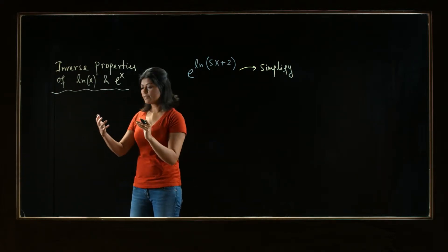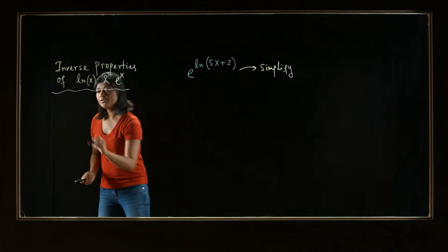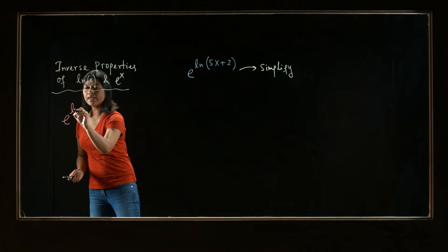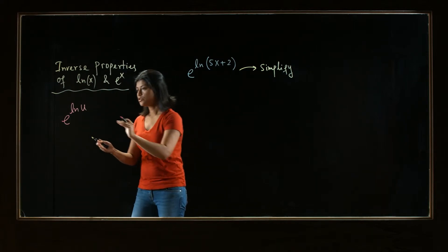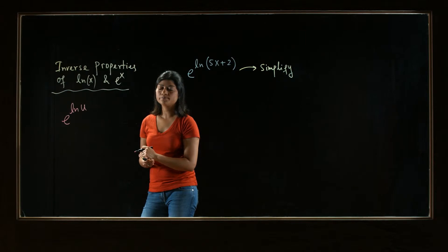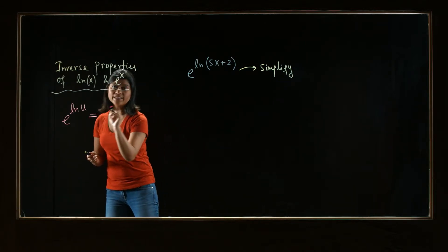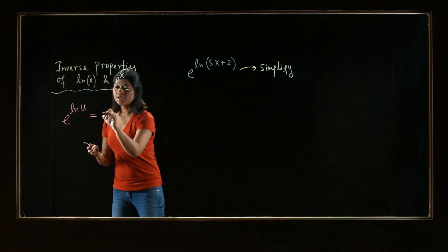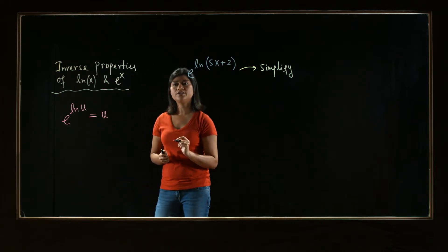What that means is when you have e to the power of ln of u, where u is an expression, when e and ln are next to each other they cancel each other. In mathematical terms, they cancel out and you end up getting just u.